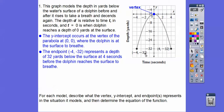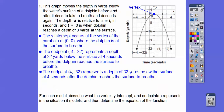The negative 32 represents 32 feet below the surface, and it's 4 seconds before the dolphin reaches the surface to take a breath — that's why it's minus 4. And then this endpoint over here represents the depth of 32 yards below the surface at 4 seconds after the dolphin had reached the surface. At 0 seconds the dolphin reaches sea level, so this positive 4 would be 4 seconds after it takes a breath.